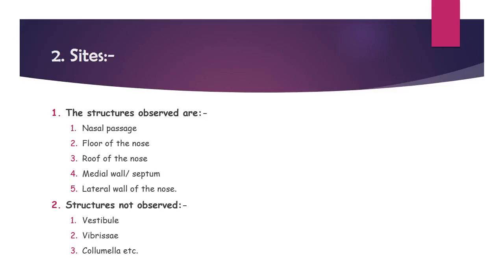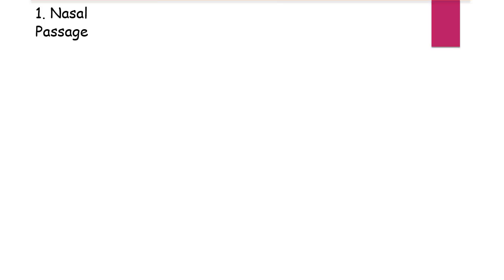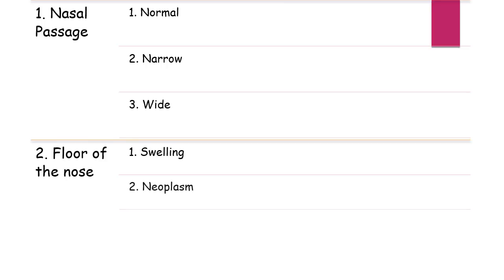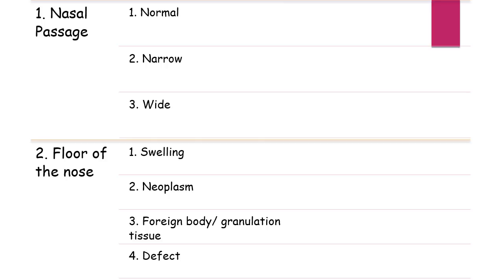What to observe and the possible pathologies: Point 1 — nasal passage. You need to observe the depth and width of the nasal passage; it can be narrow, normal, or wide. Point 2 — floor of the nose: the floor can be normal or present with swelling, neoplasm, foreign body, granulation tissue, defect, and others.